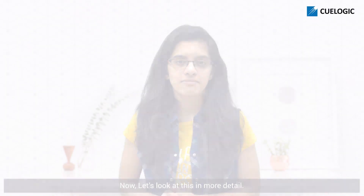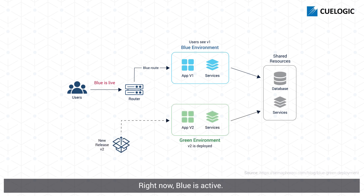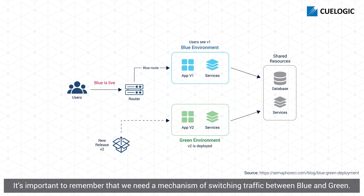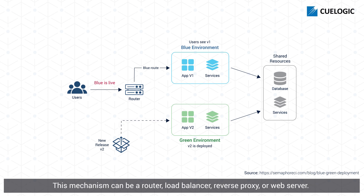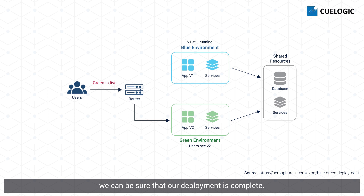Now let's look at this in more detail. Consider that blue is the active production environment and green is the staging environment. Right now, blue is active, which means that blue receives all production traffic, and we can run an exhaustive test suite in green. It's important to remember that we need a mechanism of switching traffic between blue and green — this mechanism can be a router, load balancer, reverse proxy, or web server. After we are satisfied that everything is running smoothly in green, we can gradually transfer production traffic from blue to green. When all the traffic has been transferred to green, we can be sure that our deployment is complete.